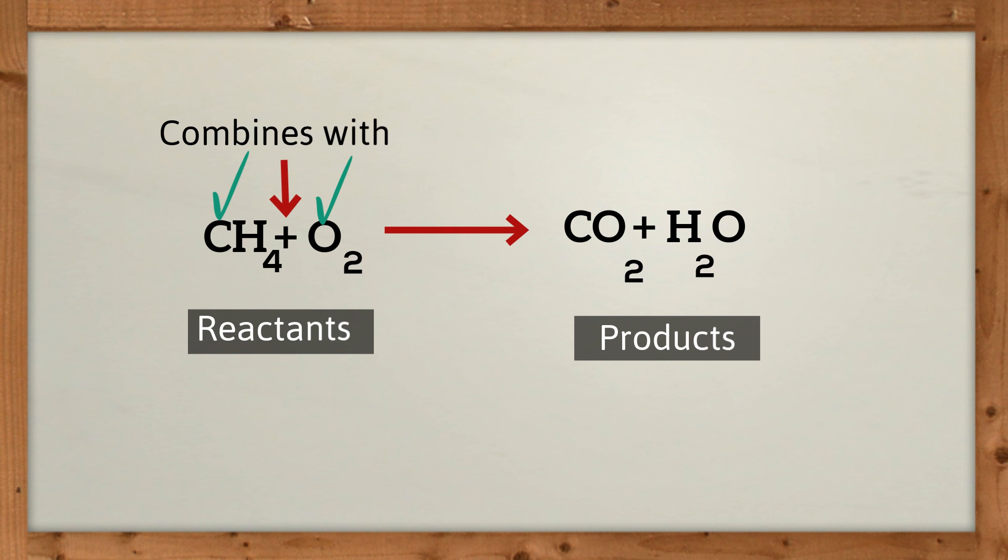The plus marks on the left of the arrow tell you which elements or compounds are combining. The arrow tells you what it will produce or yield.